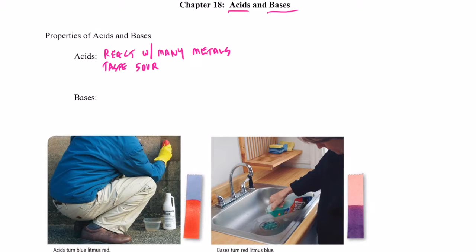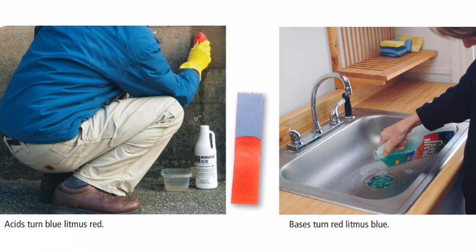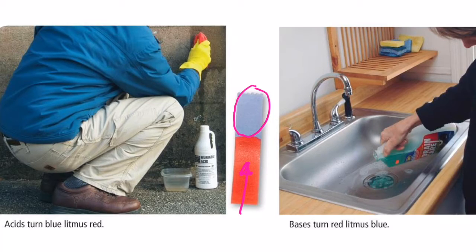The last property I want to list is that acids turn blue litmus paper red. You can see that in the illustration below. If I take blue litmus paper — normally blue — and it comes in contact with an acid, it turns red. Litmus paper has a chemical on it that changes color based upon the pH of the solution it comes in contact with.